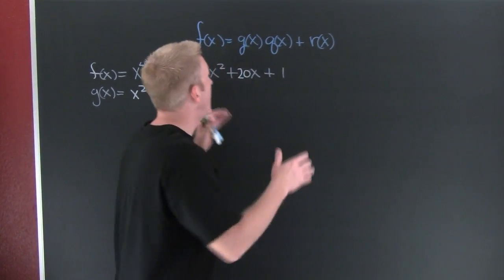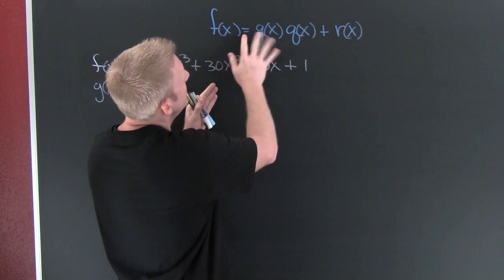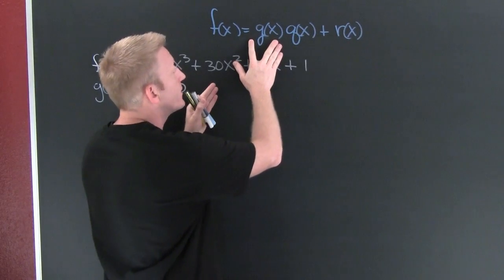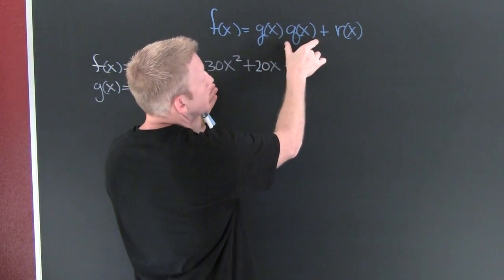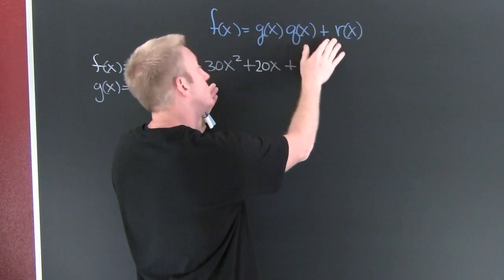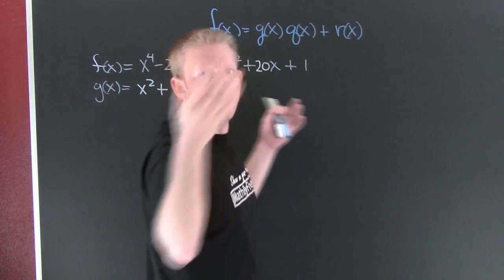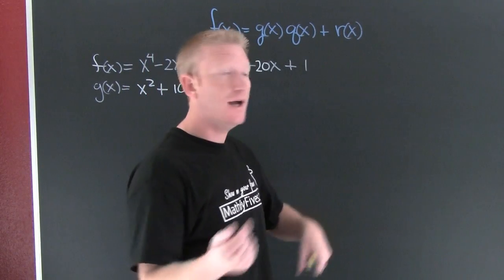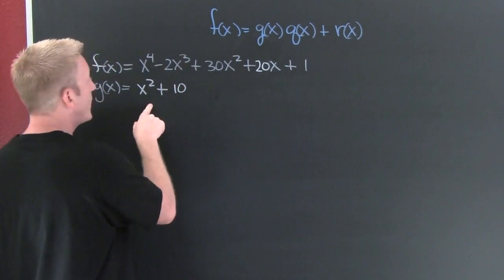Okay, now that we got the definition, I've got this: my function is g(x) times some other function, the quotient q(x), upon division plus some remainder r(x). Why don't we get an example?